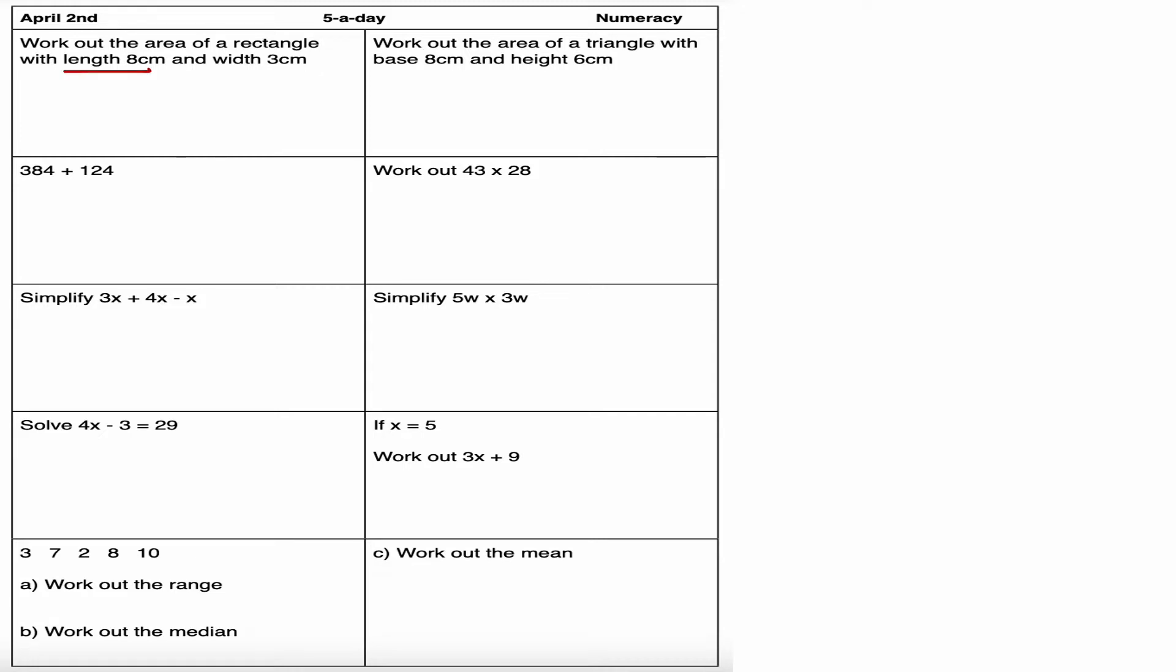The area of a rectangle by definition is the length times the width, so it's 8 times 3, which is 24. The units is centimeters squared. The area is always unit squared—it's meter squared, centimeter squared, millimeters squared.